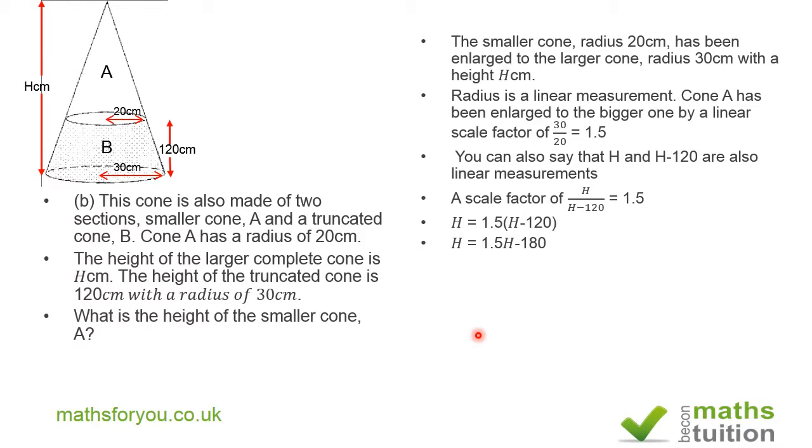If we subtract H from both sides, we get 0.5H equals 180. So H equals 180 divided by 0.5, which gives us H equals 360 centimeters.